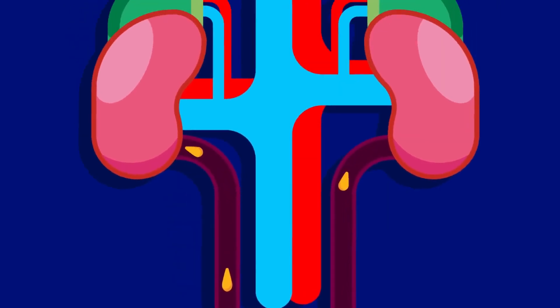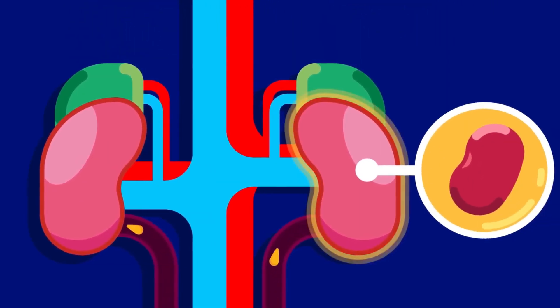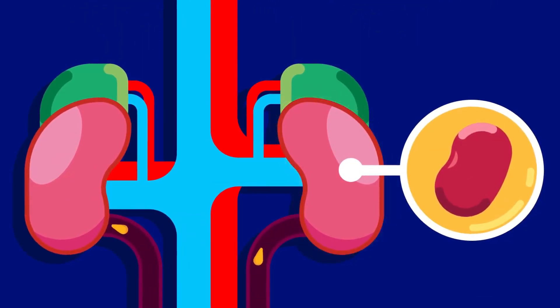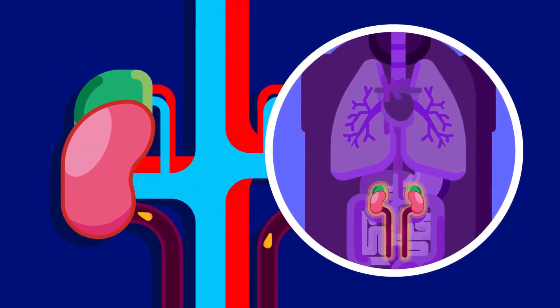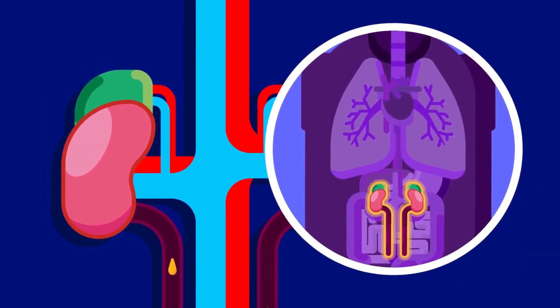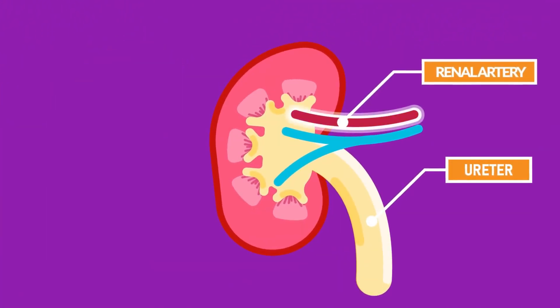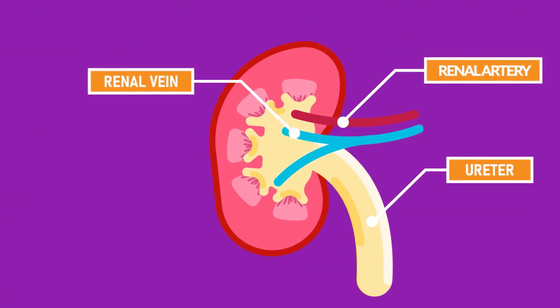Kidney. There are two kidneys. Both are reddish brown and bean shaped. Kidneys are located towards the back of the abdominal cavity. Attached to the kidney are the ureter, renal artery, and renal vein.